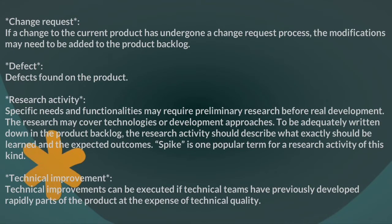Change request: if a change to the current product has undergone a change request process, the modifications may need to be added to the product backlog. Defects found on the product are also tracked here. Research activity: specific needs and functionalities may require preliminary research before real development. The research may cover technologies or development approaches, and should be adequately written down in the product backlog describing what exactly should be learned and the expected outcomes. Spike is one popular term for a research activity of this kind.